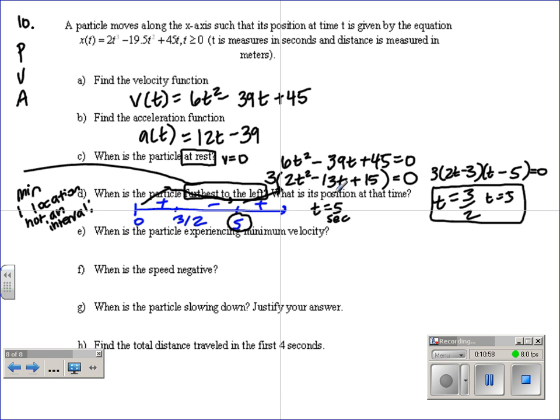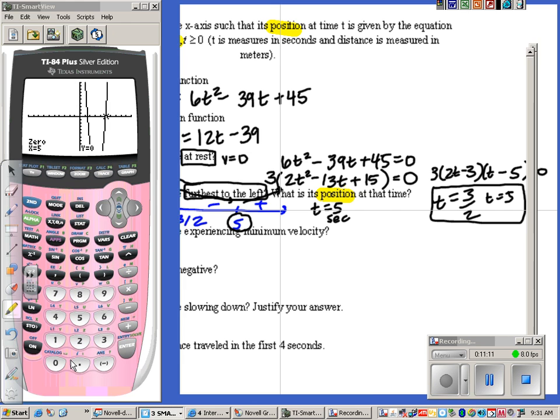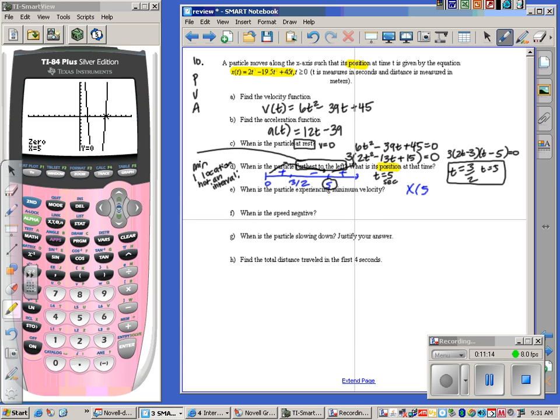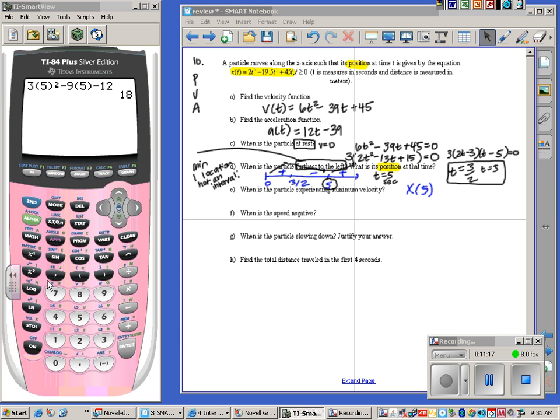Now, what is the position? Don't make this more challenging than it is. Position, well, where's the position? Oh, look up here. It says position is this guy. So, I'm going to plug 5 into that equation. So we're looking for x of 5. So go back to your calculator and type in 2 times 5 cubed minus 19.5 times 5 squared plus 45 times 5. We get negative 12.5 meters.